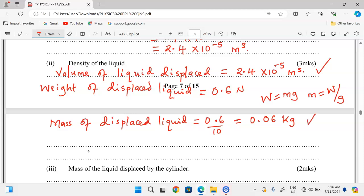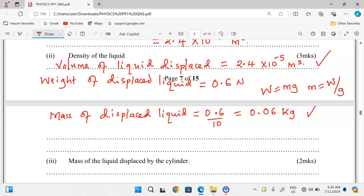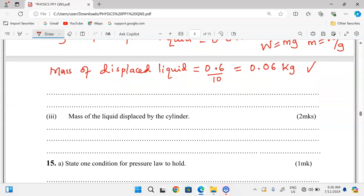And with the volume of displaced liquid and now mass for the displaced liquid, then we can obtain its density. Density is usually calculated by mass out of volume. So a mass of 0.06 and a volume of 2.4 times 10 power negative 5. When this is computed, we get exactly 2500 kilograms per meter cubed. This is the density of such a liquid in its SI units.